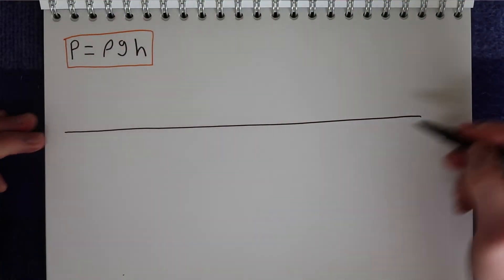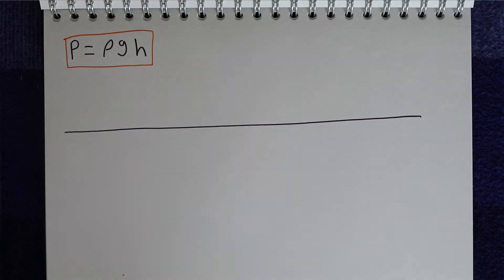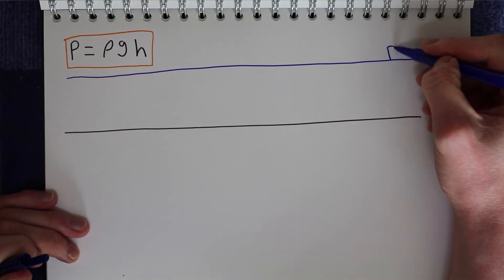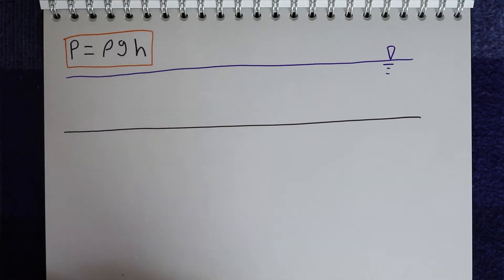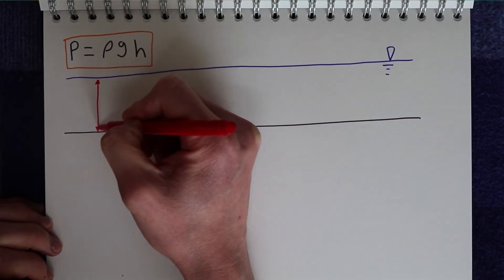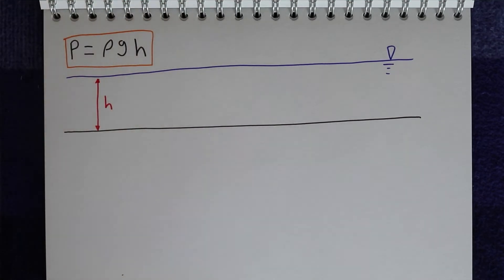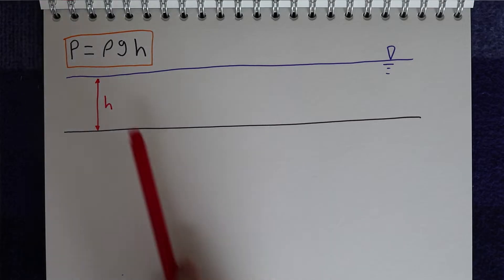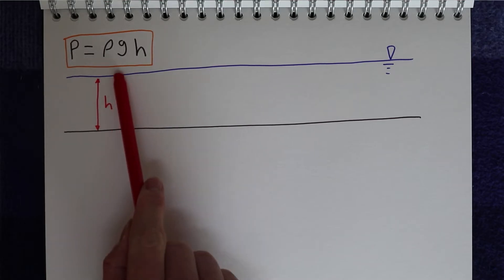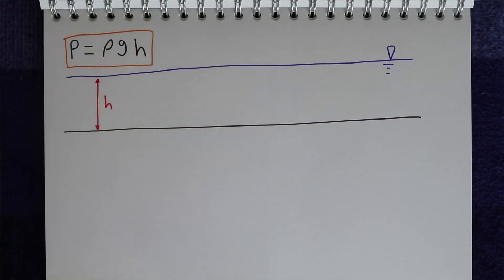So if we think of an example of a flow, we think of a river which is flowing, and our river has a water level of some height H. So if we want to calculate the static pressure of this river, all we need to do is enter into our calculation the density of water, acceleration due to gravity, and the height of our flow H. So it's quite a straightforward calculation.